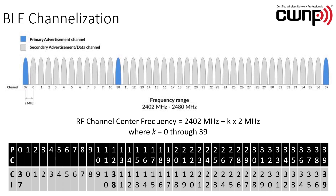PC stands for physical channel and CI stands for channel index. Physical channel 0 maps to channel index 37, and physical channel 1 maps to channel index 0, and so forth. That's why we see 37 in the image representation — the image is showing the channel indexes, the way we refer to those channels. The physical channel of channel index 37 is actually channel 0 according to the algorithm. So both Bluetooth Classic and BLE operate in the 2.4 gigahertz band. Both use channelization algorithms to determine channel numbers, and BLE adds the concept of the channel index.